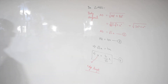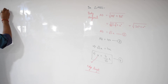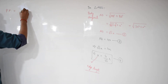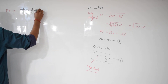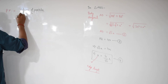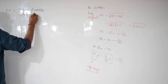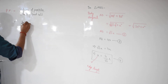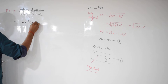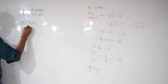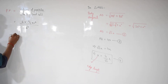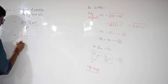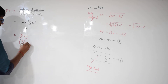Now we calculate the packing fraction. The packing fraction equals the volume of particles divided by volume of the unit cell. In a BCC arrangement we have 2 particles, so the volume of particles is 2 multiplied by (4/3)πr³, and the volume of the unit cell is a³, where a equals 4r divided by root 3.